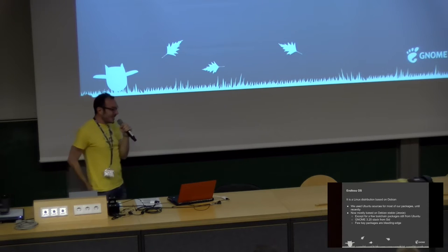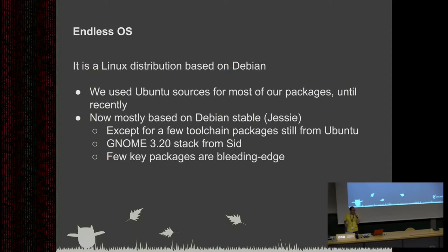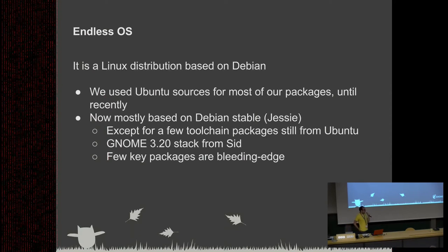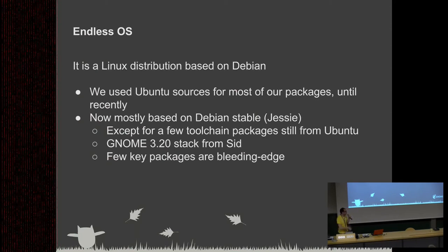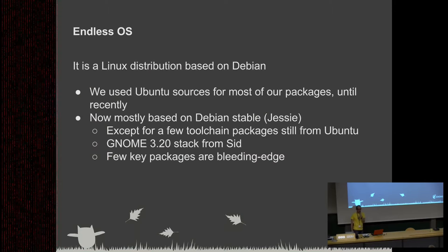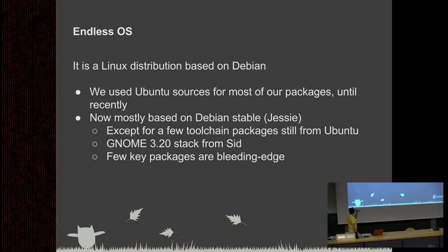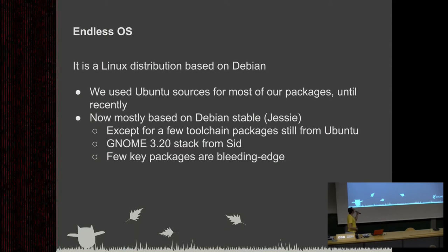Endless OS is also a Linux distribution based on Debian. We used to use Ubuntu source packages as our base for a while, mostly because when we started, Ubuntu had much better ARM support than Debian — then that changed. Now we're mostly based on Debian stable (Debian Jessie), except for a few toolchain packages we still take from Ubuntu, and newer GNOME stack packages we take from Debian unstable.